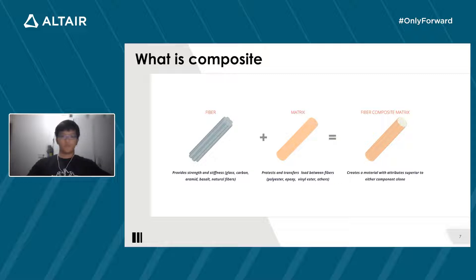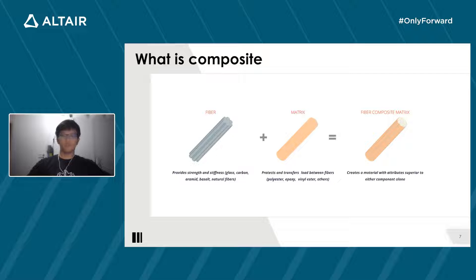Typical engineered composite materials include reinforced concrete, composite wood such as plywood, and reinforced plastics such as fiber-reinforced polymers or fiberglass. With the example of reinforced plastics, the fiber could be glass, carbon, aramid, or natural fibers. The matrix could be thermoplastic or thermoset such as epoxy, polyester, and many more.